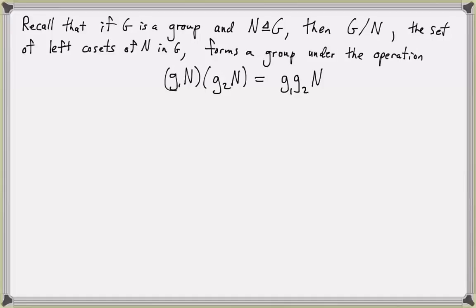Given any homomorphism, we've already shown that the kernel of that homomorphism is a normal subgroup. Now we'll show that every normal subgroup can actually be written as the kernel of a homomorphism. So there's going to be a very special homomorphism that we'll use later.